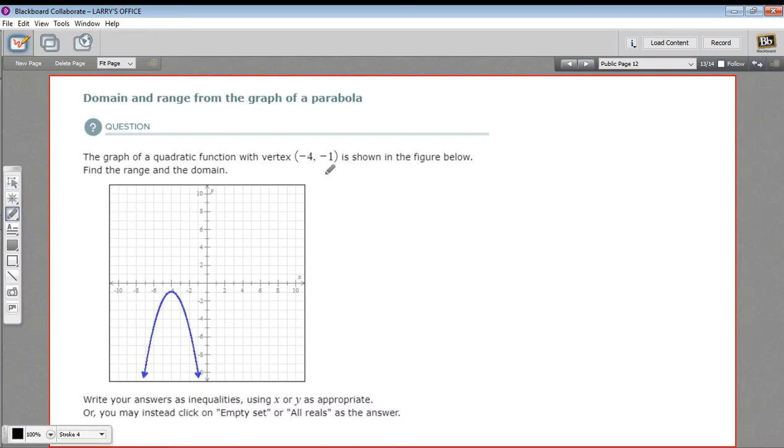In this problem, we're being asked to find the domain and the range of a parabola by looking at its graph. They've actually given us the point of the vertex, so we know one point that's on the graph. But otherwise, we just have to figure these things out by looking at the shape of the graph.